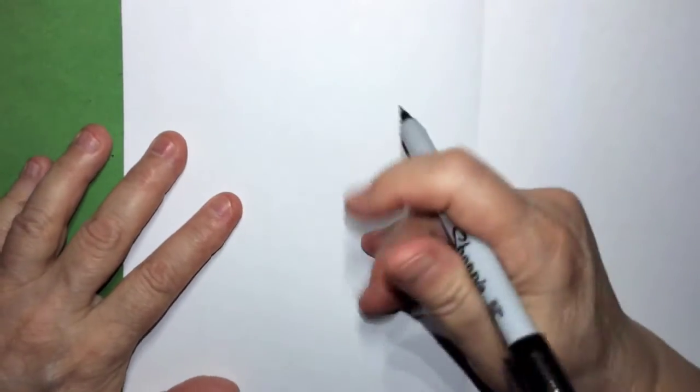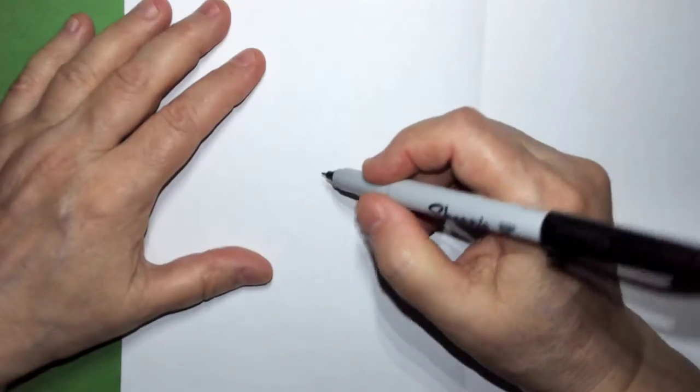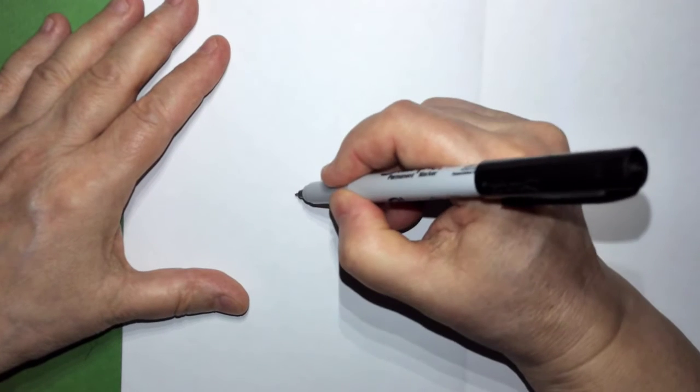You fold your paper in half and you can draw either horizontally or vertically on one half. Watch this and then turn off the video and do this on your own. Right now you're just watching.